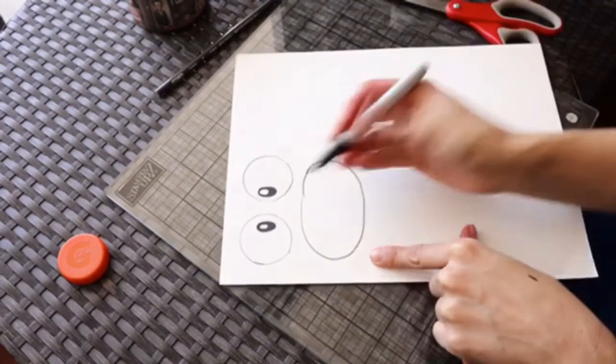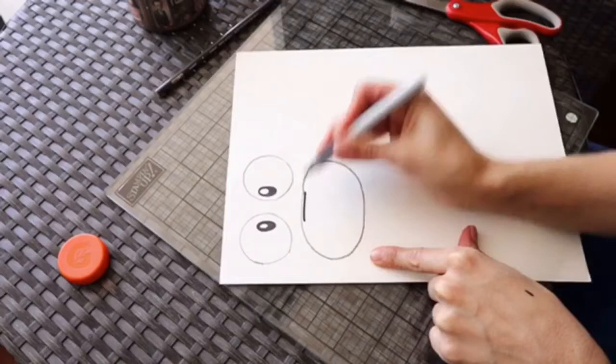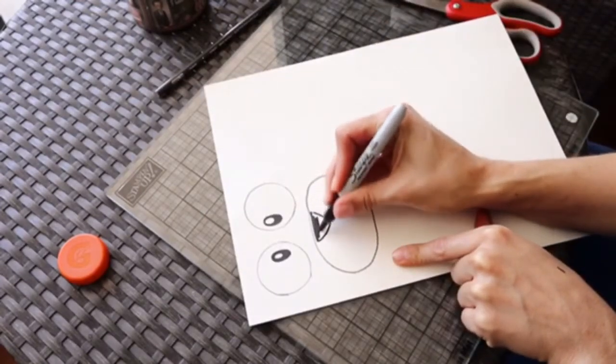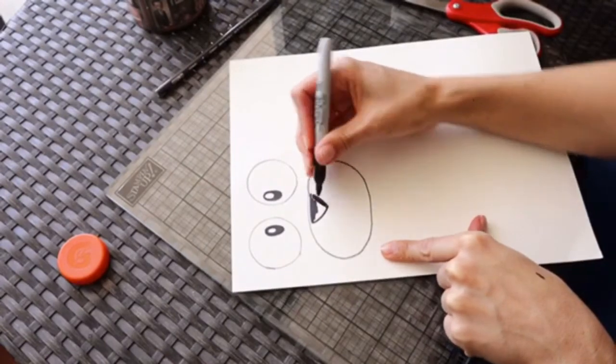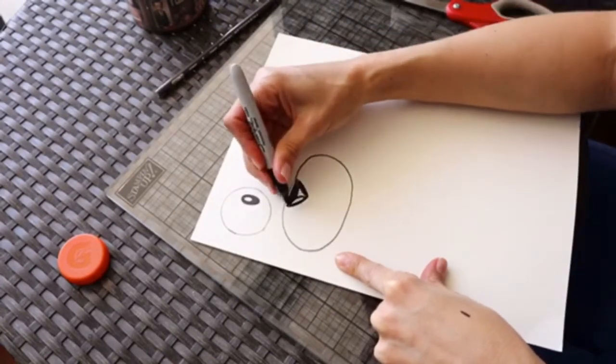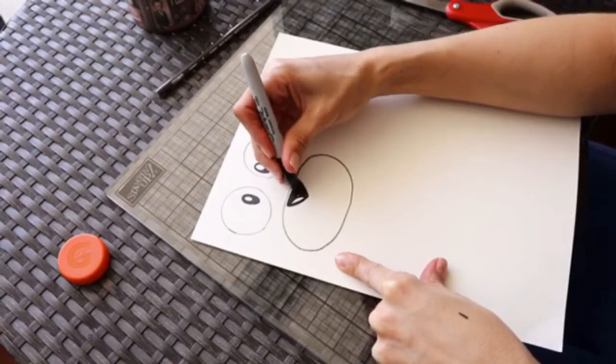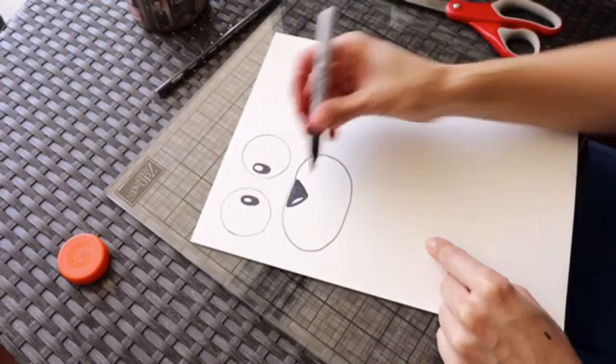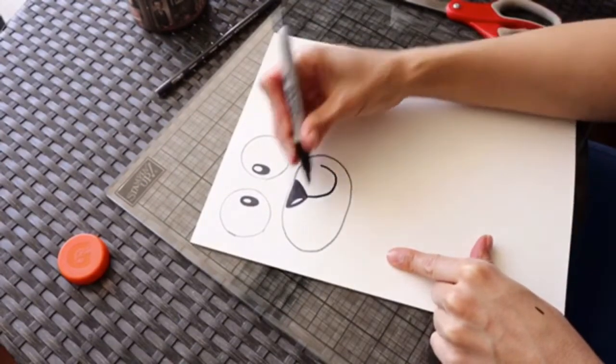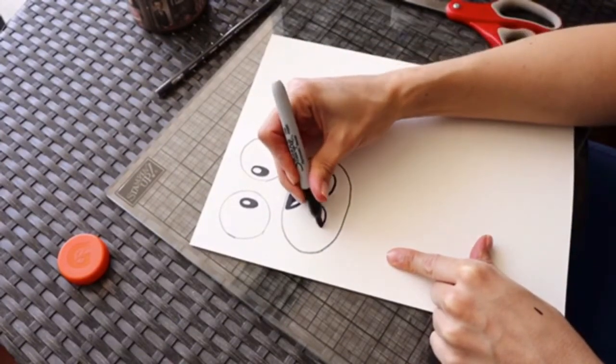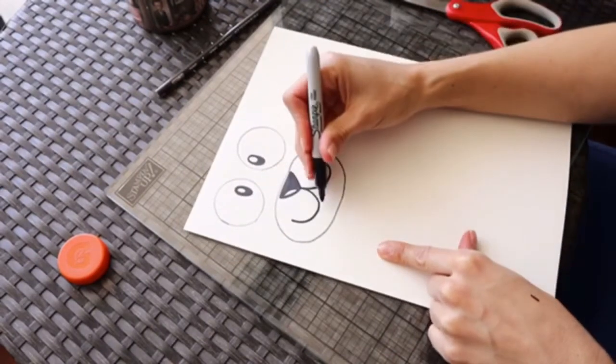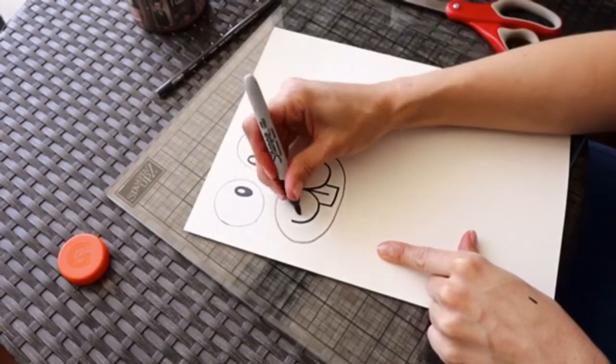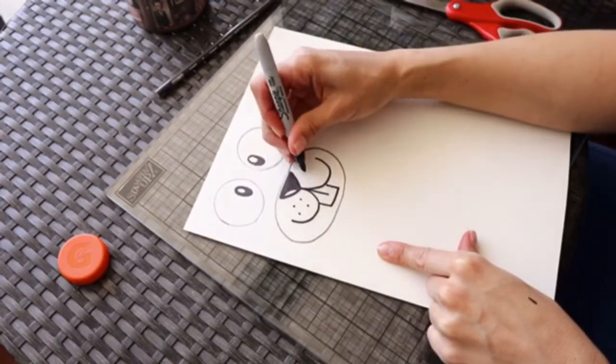On this circle, I'm going to start by making the nose. I can fill it in. If you want to have it glossy, just leave a little bit of white so it looks glossy. Then I'm going to make the letter W and I'm going to bring those teeth down. And I'm going to make some holes where the whiskers would go.